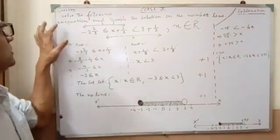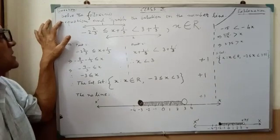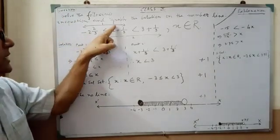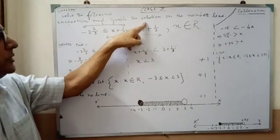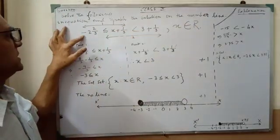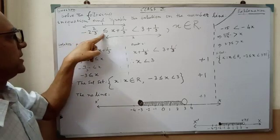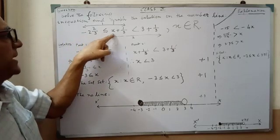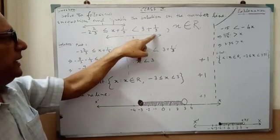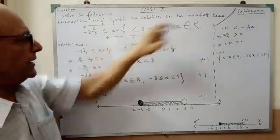I am showing one solution. The sum is given: solve the following inequality and graph the solution on the number line. The sum is: minus 2 and 2/3 less than or equal to x plus 1/3, less than 3 plus 1/3, where x belongs to R.